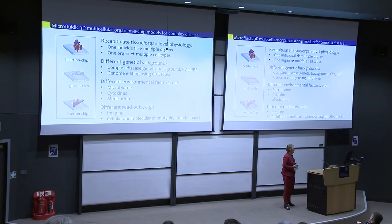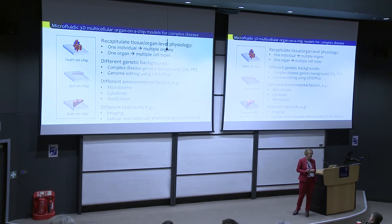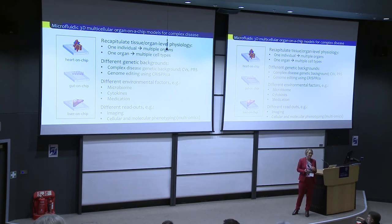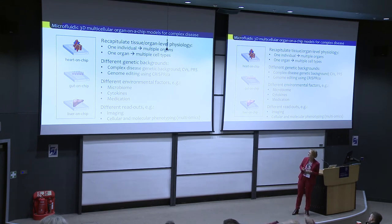So what are these organs on the chip? They are really 3D microfluidics that recapitulate tissue and organ physiology. The cool thing is that from one individual with induced pluripotent stem cells, you can make multiple organs, and each organ consists of multiple cell types. You can create different organs from the same individual — for example, heart, gut, and liver on the chip.